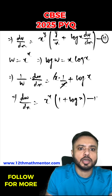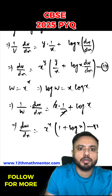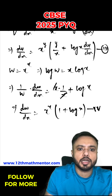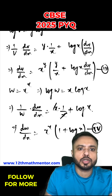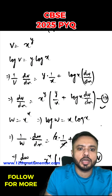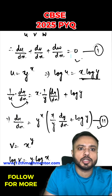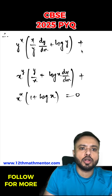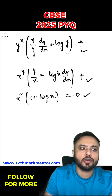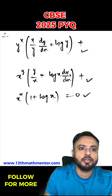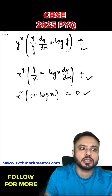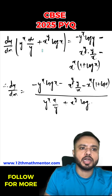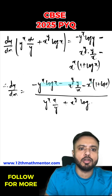Equation 2, 3, and 4 are substituted back into equation number 1. After substituting all the values, we perform all the calculations to find the value of dy by dx, and you will get the desired answer.